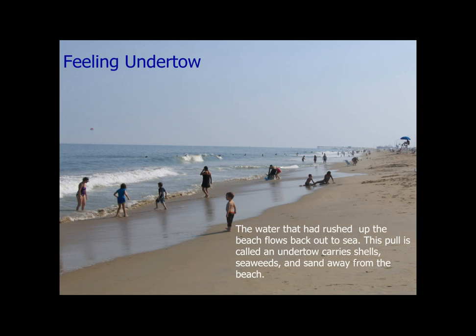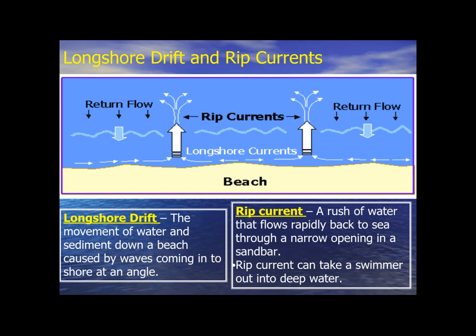The undertow can carry a lot of things back away from the seashore, including people. We also have longshore drift and rip currents. Longshore drift is when waves come in at an angle to the shore — they're called longshore drift or longshore currents. When those longshore currents meet each other, it becomes a rip current. A rip current and a rip tide are very different — the rip current comes from the land back out, caused by the return flow of the longshore currents.